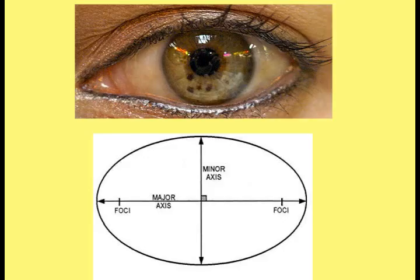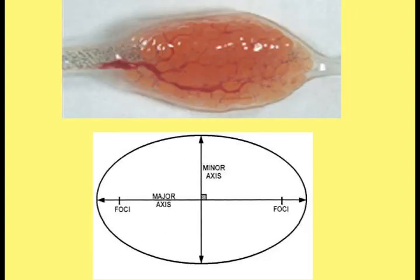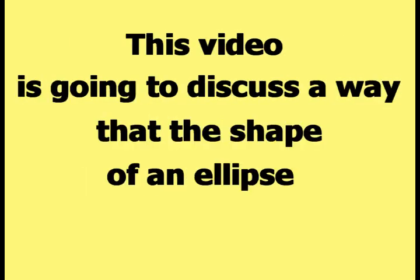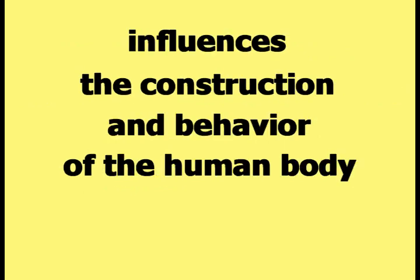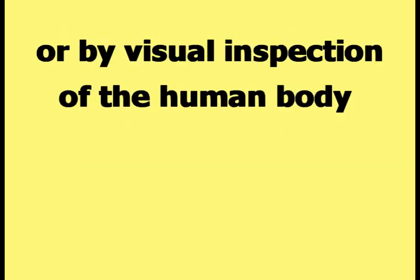The eyes, the male testicles, and the female ovaries are all examples of elliptically shaped objects found within the human body. This video is going to discuss a way that the shape of an ellipse influences the construction and behavior of the human body that cannot be found by looking in an anatomy book or by visual inspection of the human body.